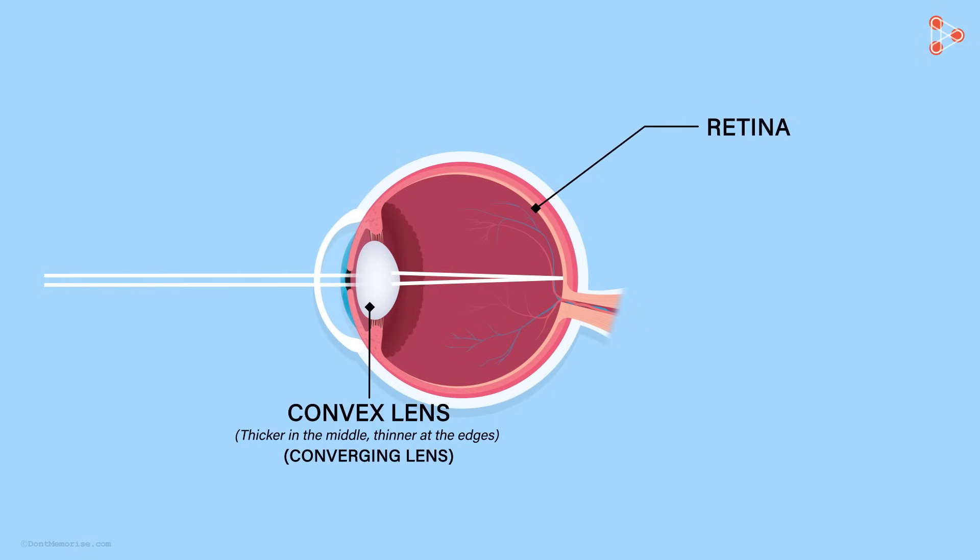Well, in a defective eye, this point of focus may lie either in front of the retina or behind the retina. We will talk about this defect of eye in our future videos, but first, let's go back to our normal eye where light is focused on the retina.